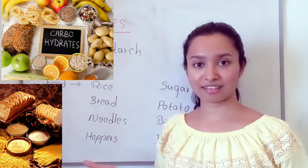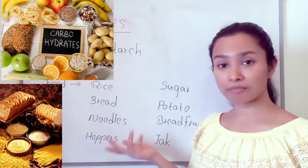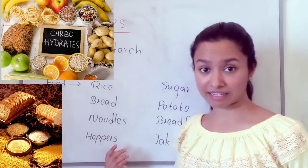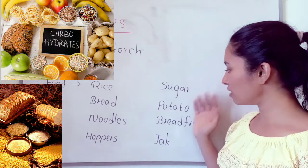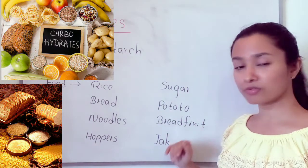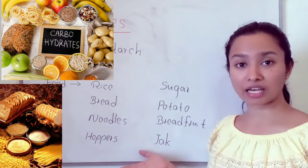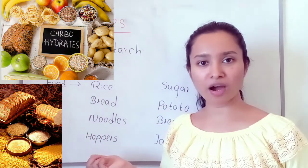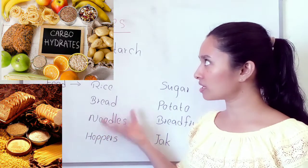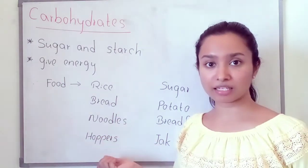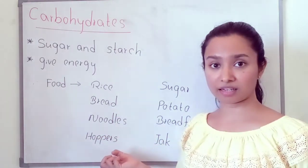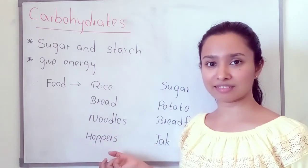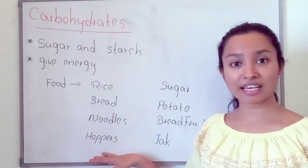Food items which are rich in carbohydrates: rice, bread, buns, noodles, hoppers and string hoppers, sugar, potato, breadfruit, and jack. These are the food items rich in carbohydrates. You can find other food items that contain carbohydrates and write the examples.